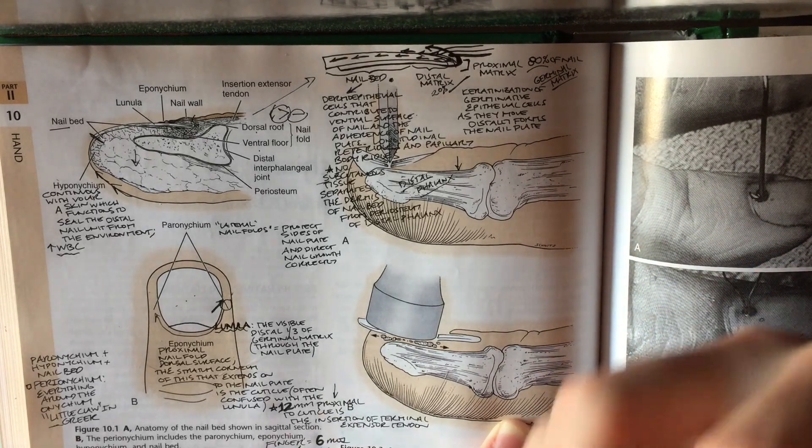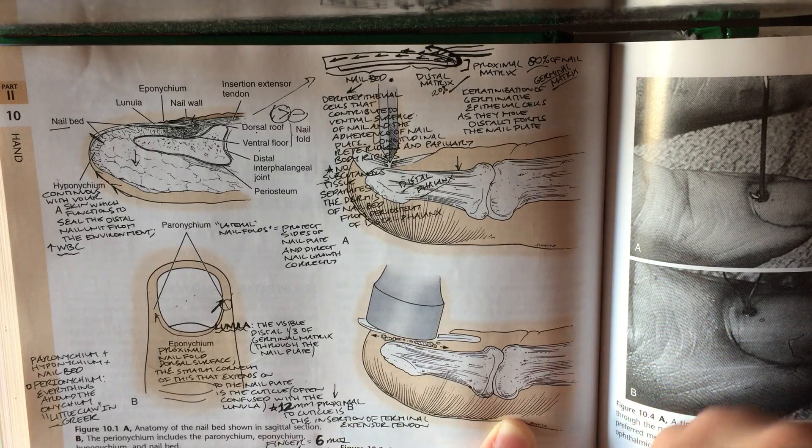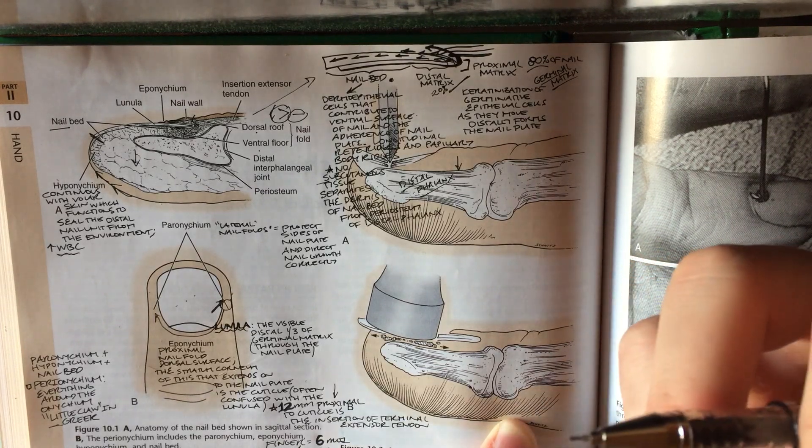It's very vascular. This is where you also see splinter hemorrhages, for example, someone that's throwing septic emboli, someone that has bacterial endocarditis.